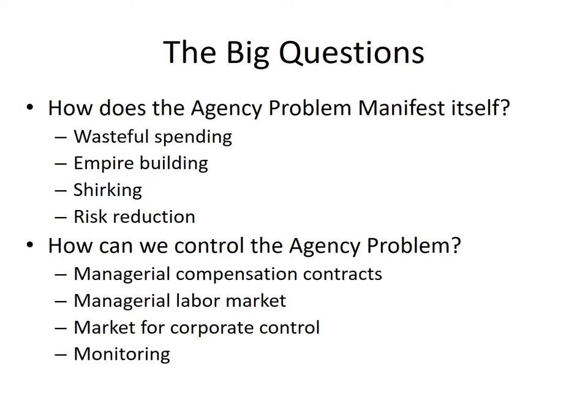Let's talk about the big questions in agency theory. The first one is: how does the agency problem manifest itself? Wasteful spending is the easiest one we see — people are less careful with other people's money than with their own, and this is also true with managers. They are less careful with the company's money, which is actually the shareholders' money, than they are with their own. We also see empire building, where managers grow the firm, either organically or through acquisition, in a way that doesn't increase the wealth of shareholders but does increase their own power and prestige.